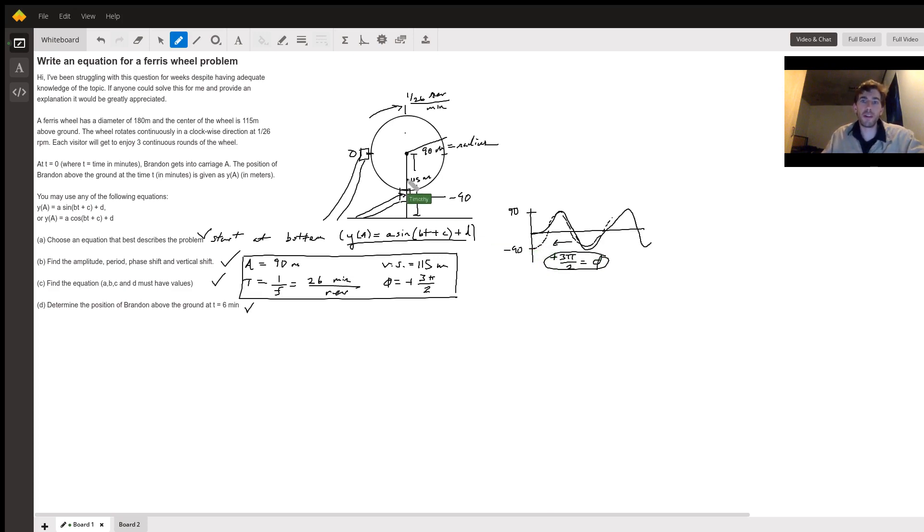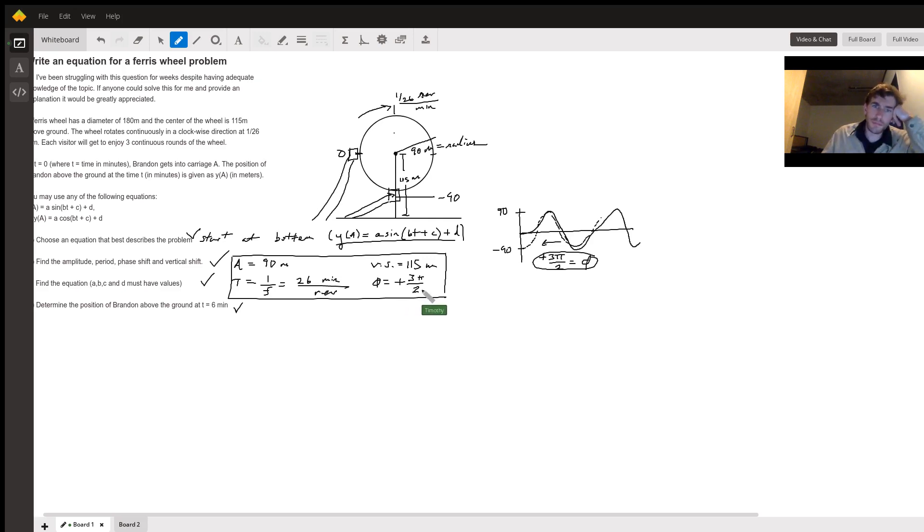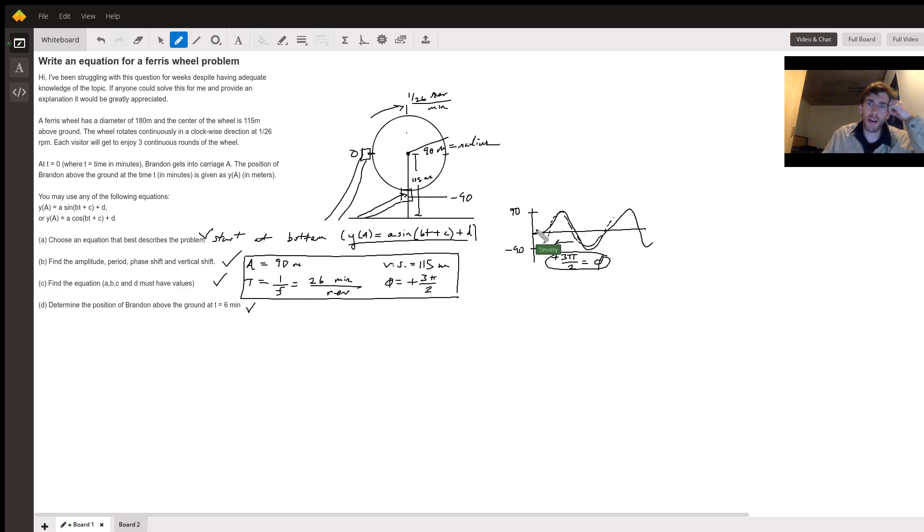If he started here, you would start here with the cosine curve. So we're basically taking this and we're shifting it by three pi over two to get to a sine. So our phase shift is going to be three pi over two. Now, we're trying to find the amplitude. The amplitude is how high it is to one of the crests of the wave. So the amplitude is 90.